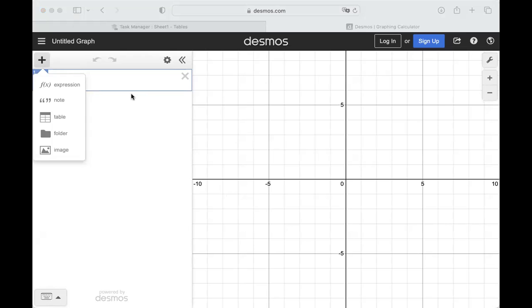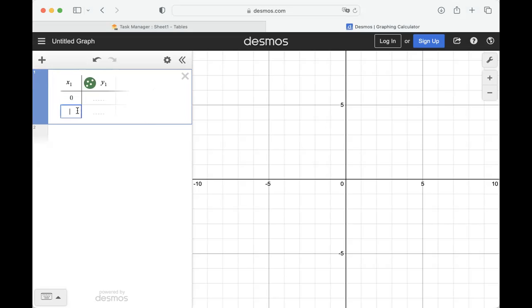So using Desmos, first I'm going to add a table. If you click on the plus button, add item, there's table, and you can put in your X values. So in this instance, it goes 0 through 7.